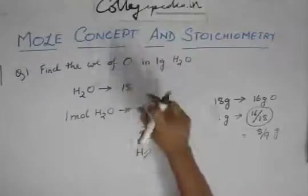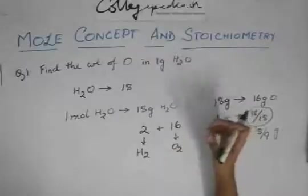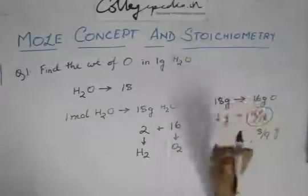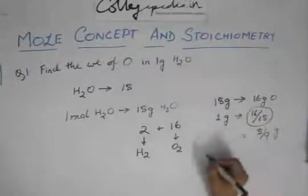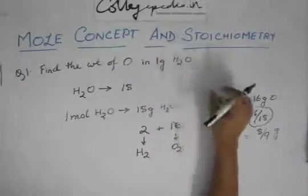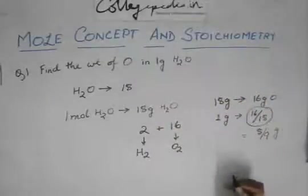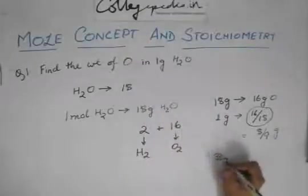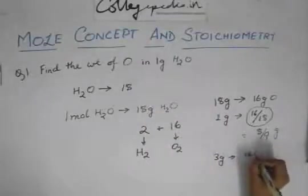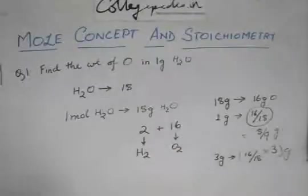If you're asked to find the weight of any element in, suppose, x grams of a molecule containing that element, you can always check the mass number, check the contribution of that element to that mass number, and then divide it. So if they had given 3 grams, you could have said it's 16 by 18 times 3. It's nothing but the unitary method.